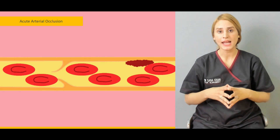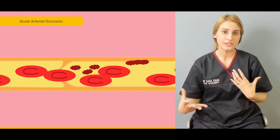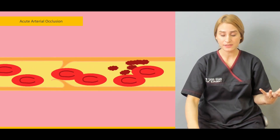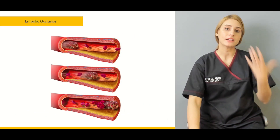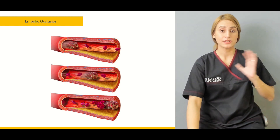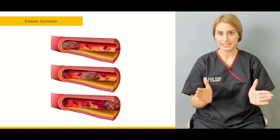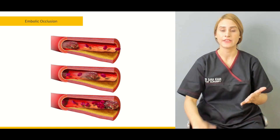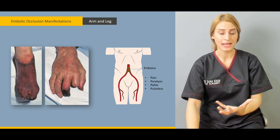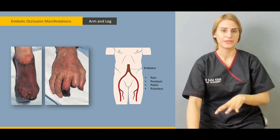We will be talking about acute arterial occlusion — the phenomena and mechanism behind it. We'll be talking about embolic occlusion and thrombotic occlusion, the difference in their presentation, and the origin of the emboli, most of the time from the heart, and how they present to you.